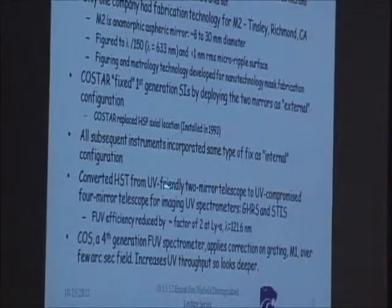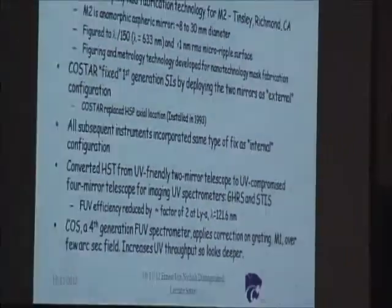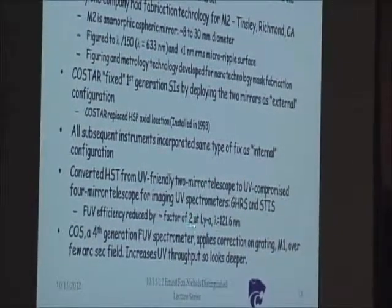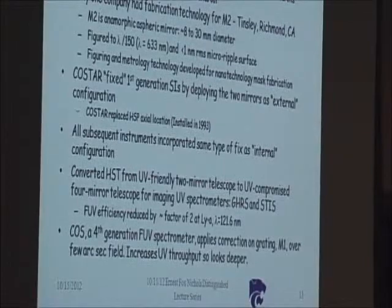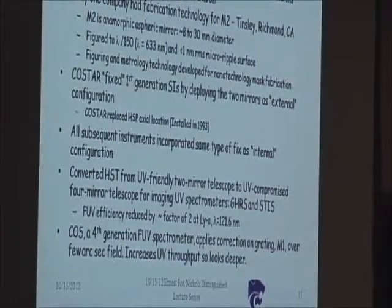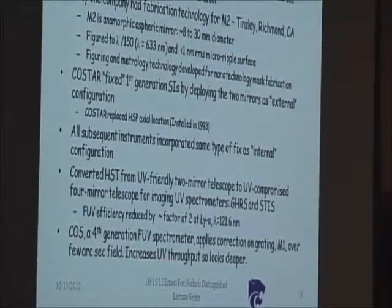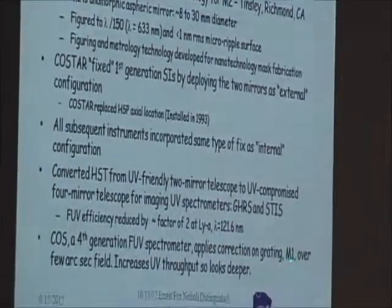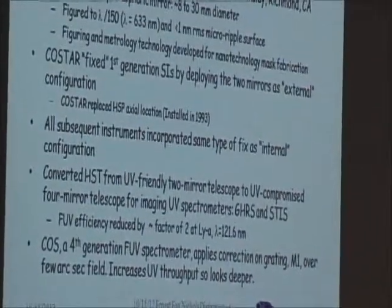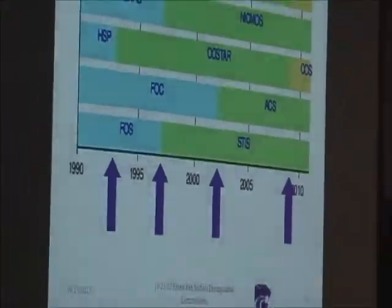A key thing here is that for spectrometers where you need to form an image onto a slit, the two extra mirrors took away half the light at the short wavelengths. That was a penalty we just had to accept. It was UV-friendly until we put those two in there. Except there is one instrument — a fourth-generation instrument, a far ultraviolet instrument going down to maybe 1100 angstroms, 110 nanometers — where we put the correction on the M1 mirror and could correct over a small field.